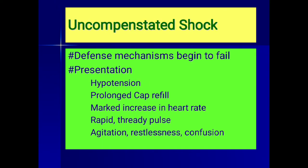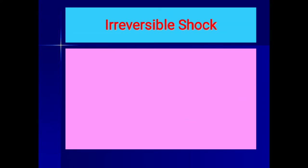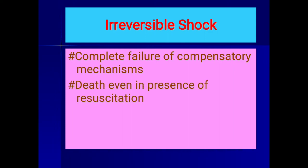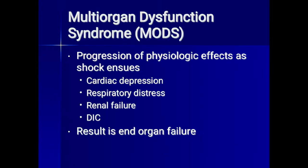In uncompensated shock, defense mechanisms begin to fail and the presentation includes hypotension, prolonged capillary refill, marked increase in heart rate, rapid thready pulse, agitation, restlessness, and confusion. Irreversible shock is complete failure of compensatory mechanisms, with death even in the presence of resuscitation because the trauma triad of death has set in. This leads to multiple organ dysfunction syndrome (MODS). The progression includes cardiac depression, respiratory distress, renal failure, and DIC, resulting in end organ failure.